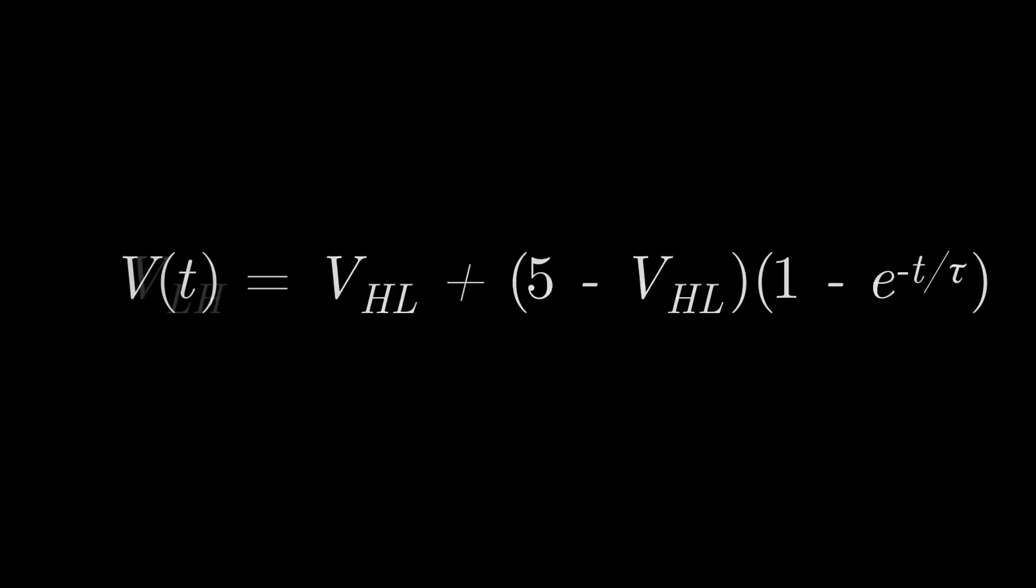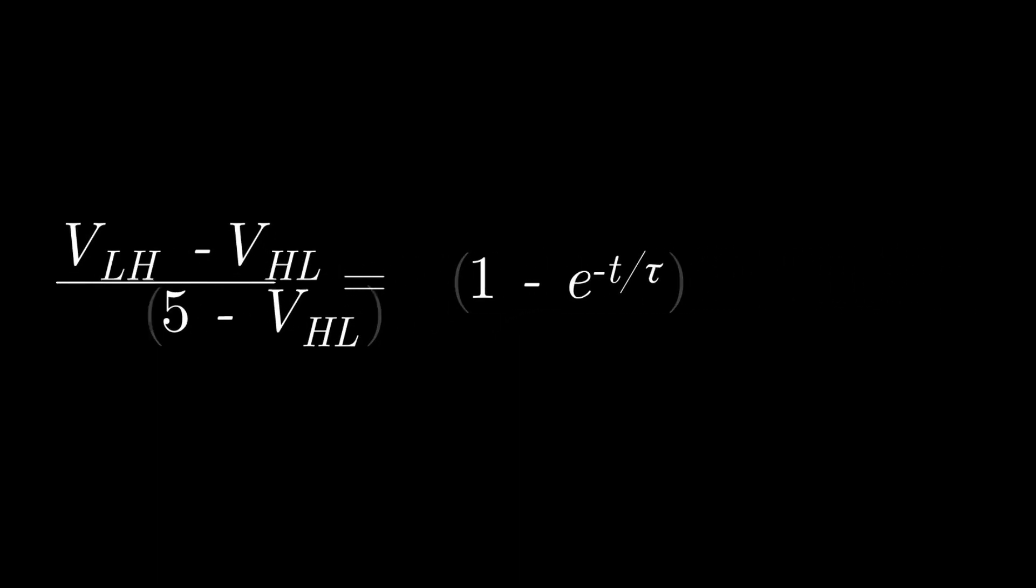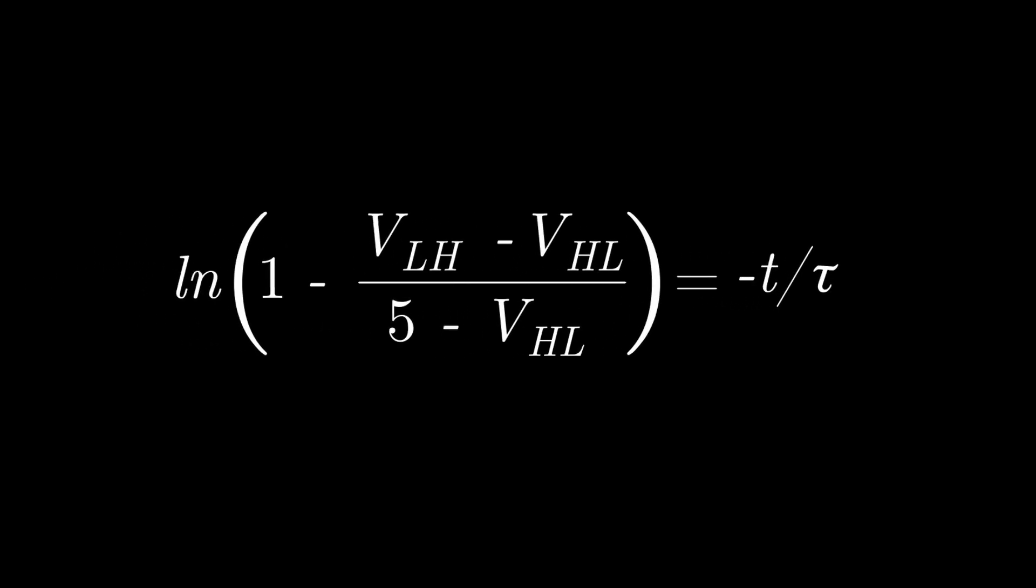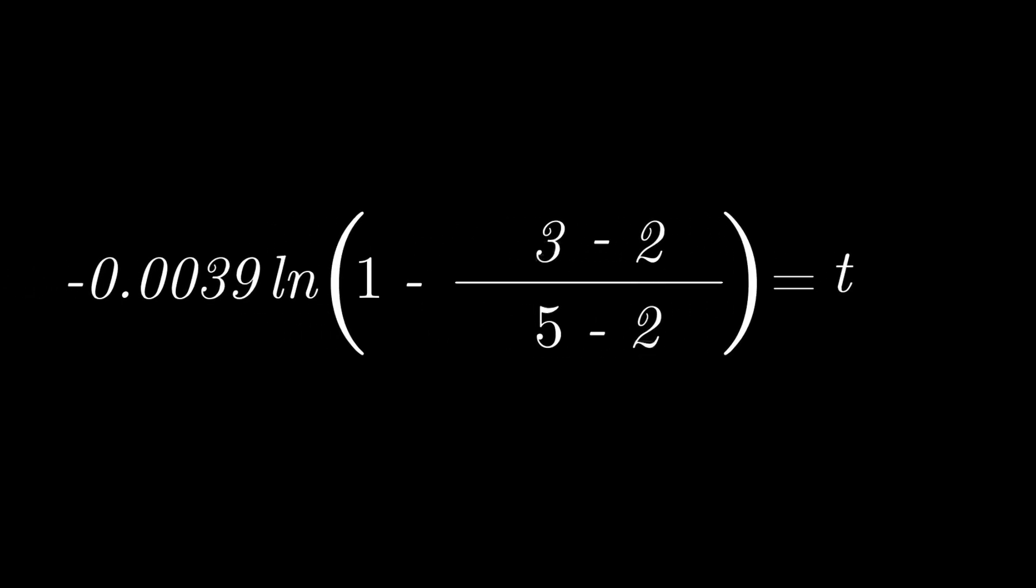So we'll rearrange to get the exponent out by itself. Take the log of both sides, shift tau over to the left, and then we have our equation for T. If we substitute in the values that we have from the data sheet, our low to high and high to low thresholds, and also the value for tau, then we can find that T is 1.58 milliseconds. This is the rise time for the capacitor charging, which corresponds to the clock's low time.